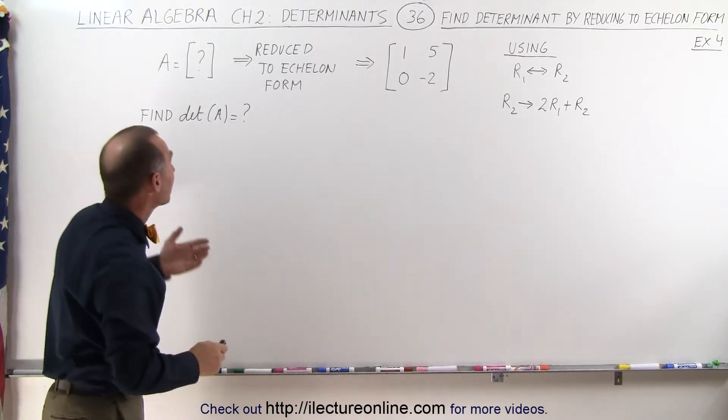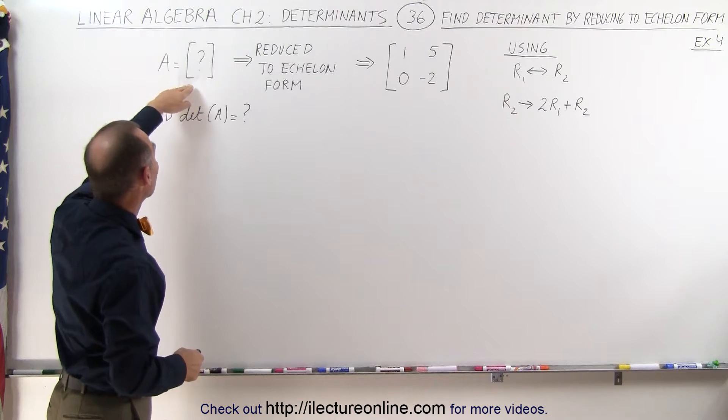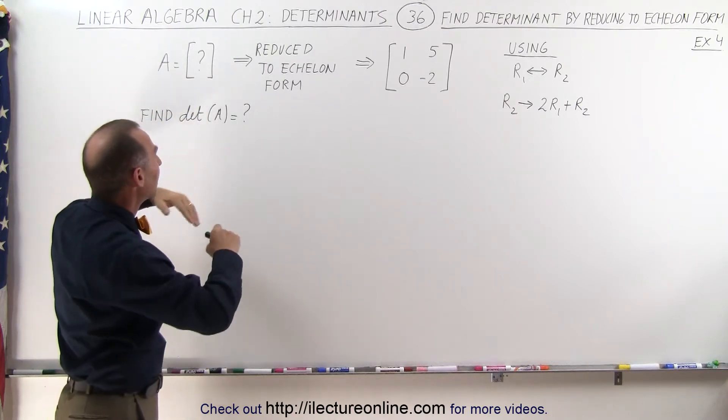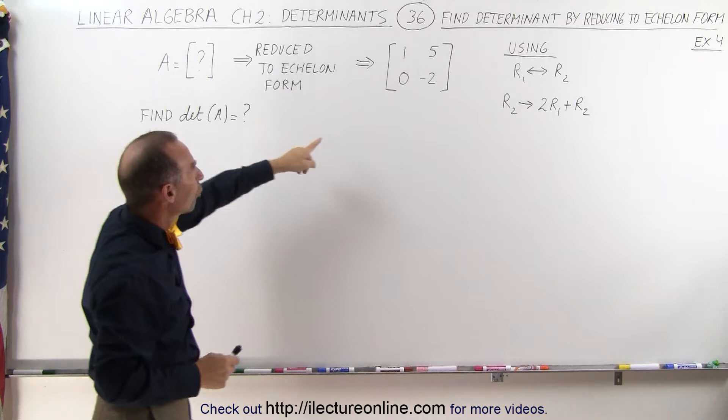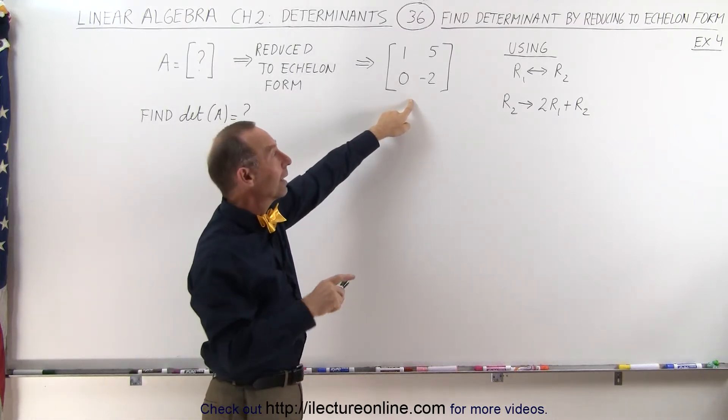All they're giving us here is that there's some matrix A for which we need to find the determinant. But when that matrix was reduced to echelon form, it looked like this.